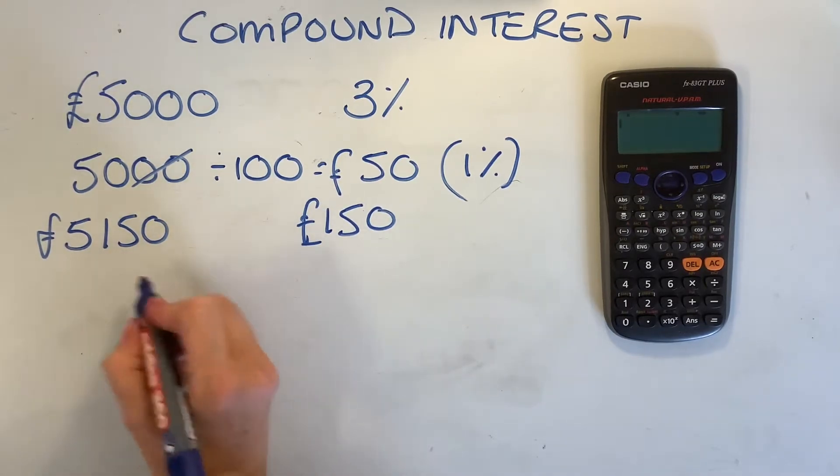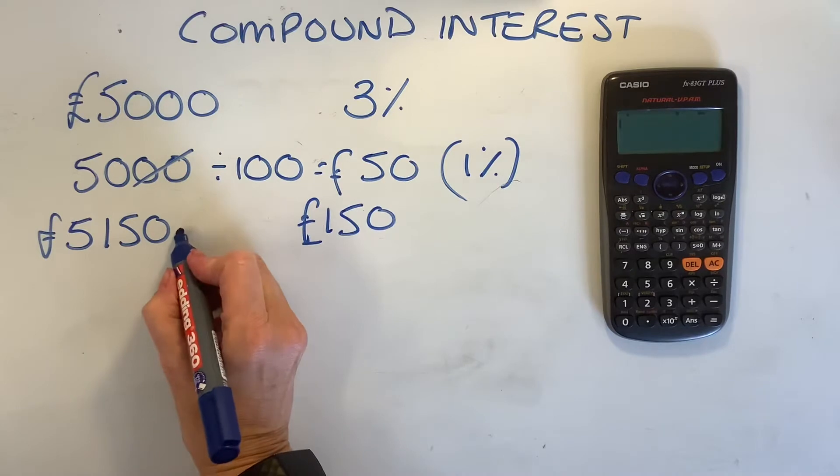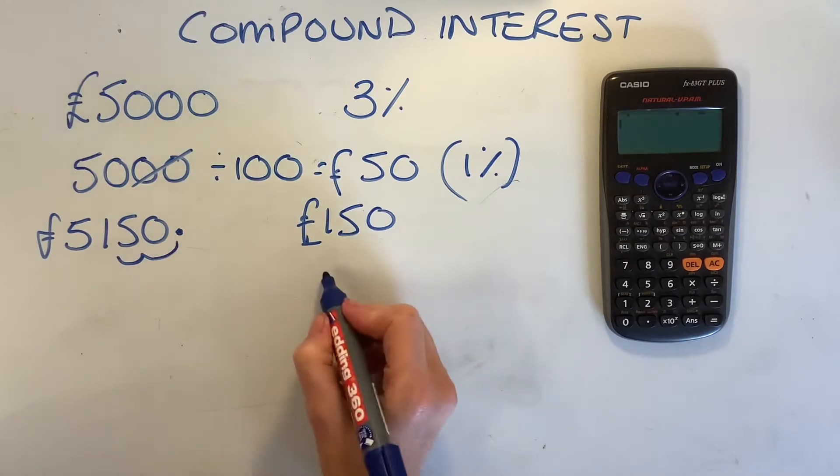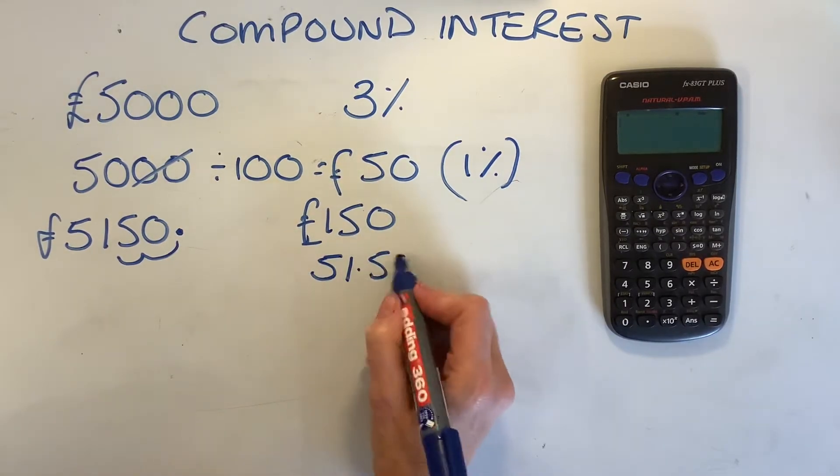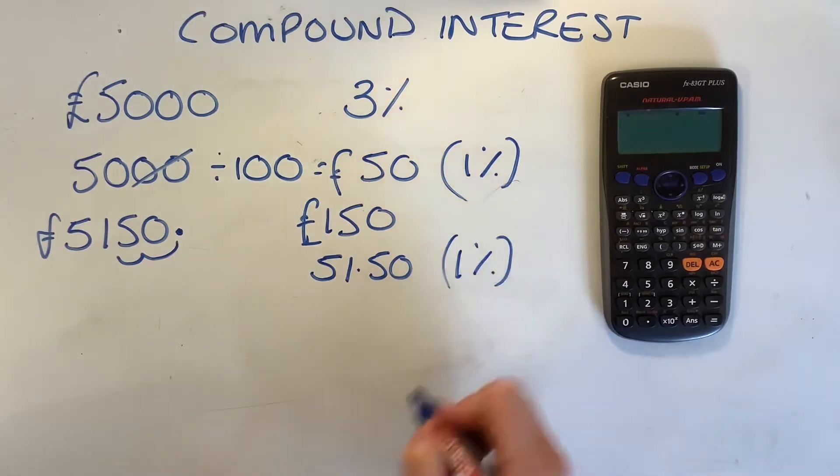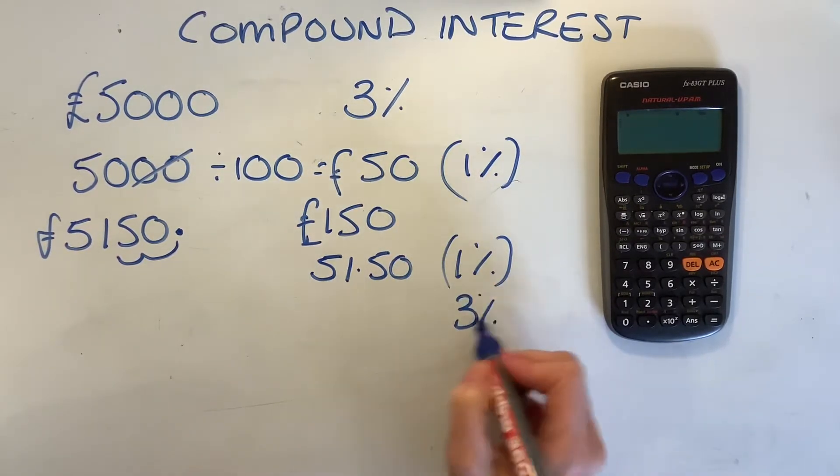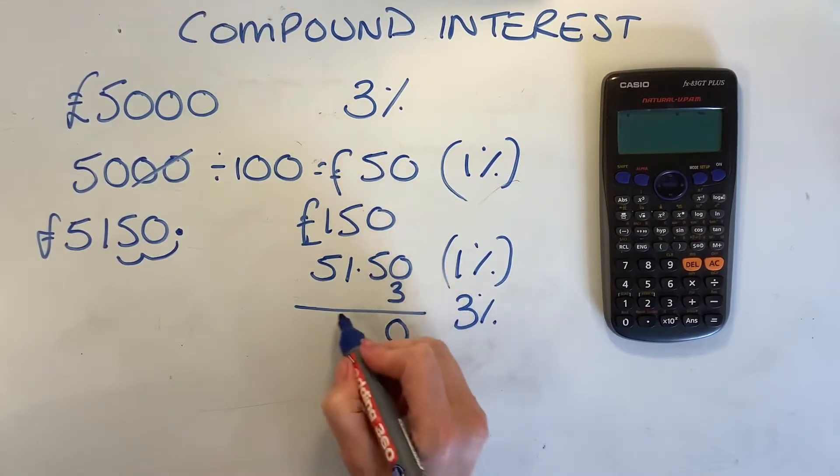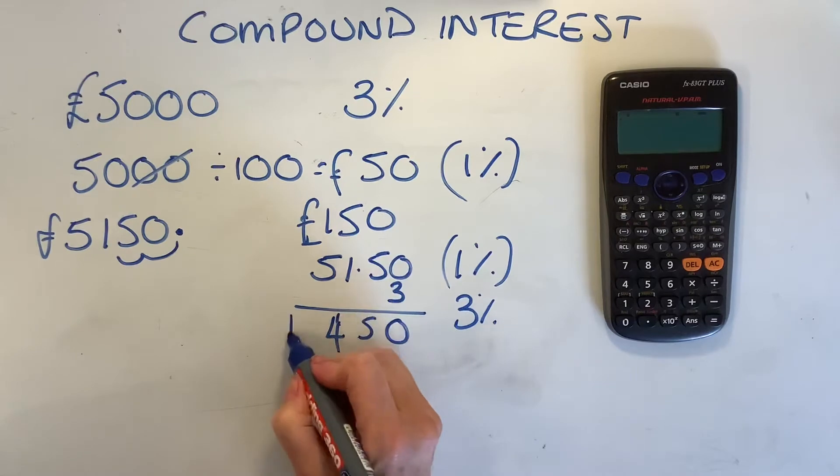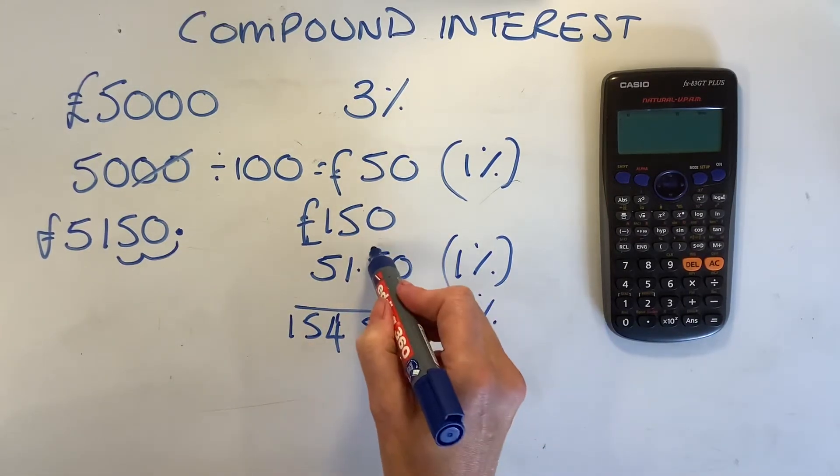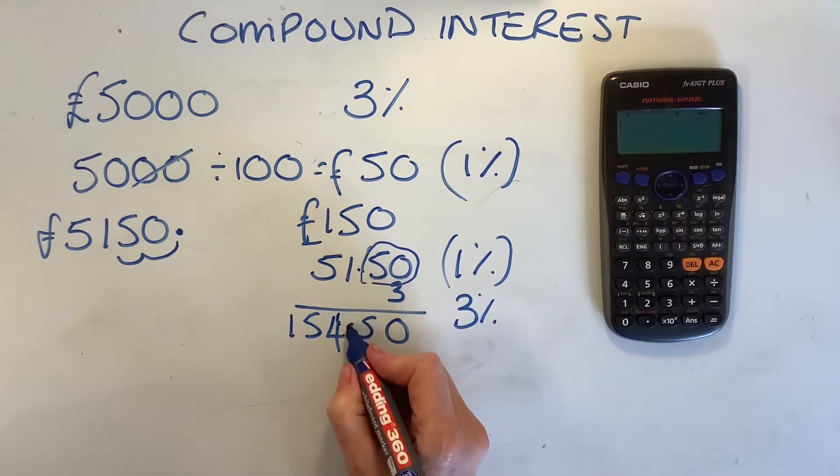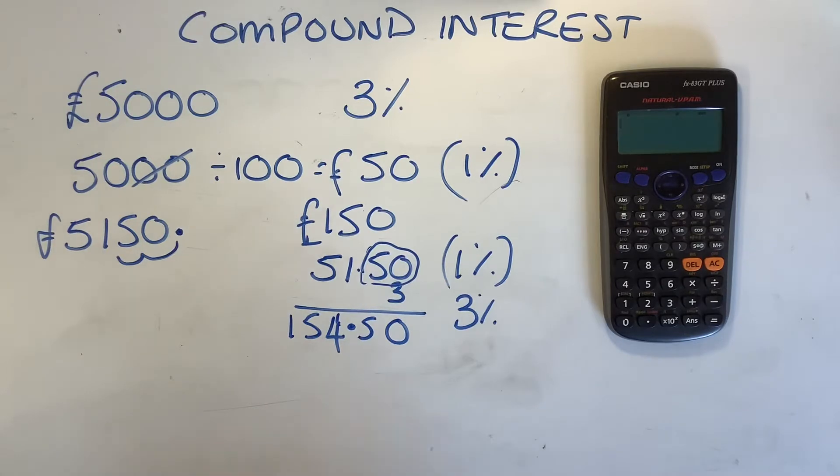I can't actually just take two zeros off, like the other one. I've got to actually move the decimal point two places. We end up now with £51 and 50p. So, that's 1% on our second year. I want 3% though, so I'm going to times it by three. 0 times 3 is always 0. 5 times 3 is 15. 1 times 3 is 3, 4. 5 times 3 is 15. Right, in the question, I've got two numbers here after the decimal point. So, in the answer, I've got to have two numbers after the decimal point. Okay, so I've got £154 and 50p.